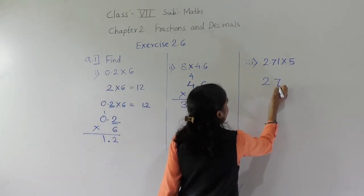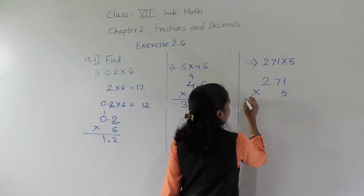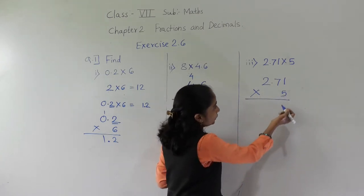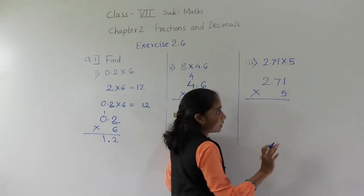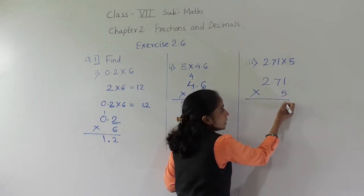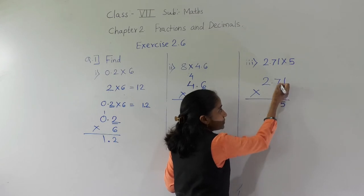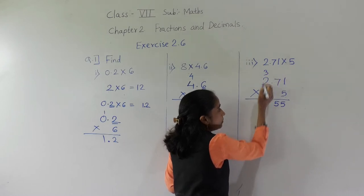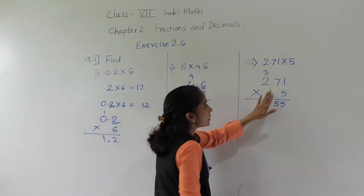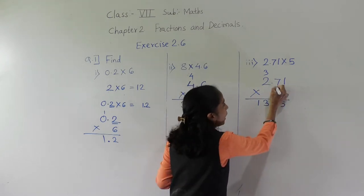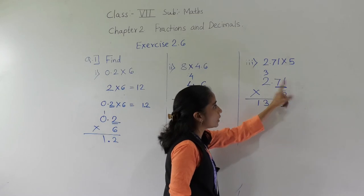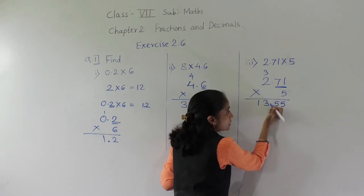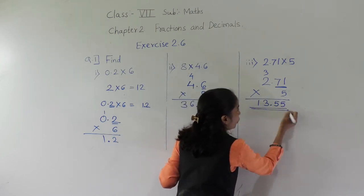2.71 multiplied by 5. Don't think about the decimal point first — 5 ones are 5, 5 sevens are 35, 5 twos are 10, plus 3 is 13. After getting the answer 1355, now see — after the decimal point there are 2 digits, so for the answer before 2 digits give the decimal point. Our answer is 13.55.